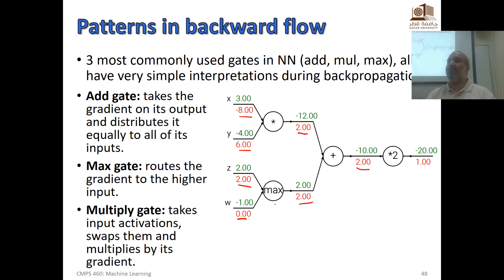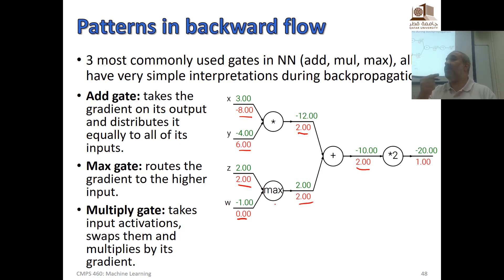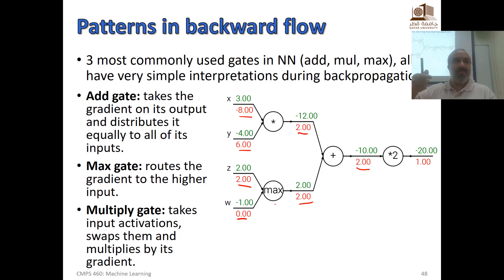Do you see how backpropagation can be used for training? We have a neural network with a loss function that is a function of all weights and biases. To train using gradient descent, we compute the gradient for every single parameter using backpropagation. For every training example, we do a forward and backward pass to compute the gradients, then update the parameters, then take another example and repeat. We'll talk about training in detail in the next lecture.